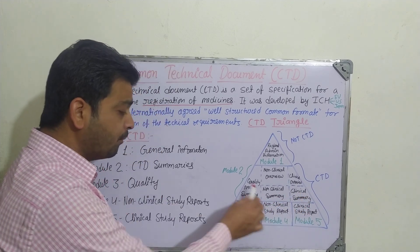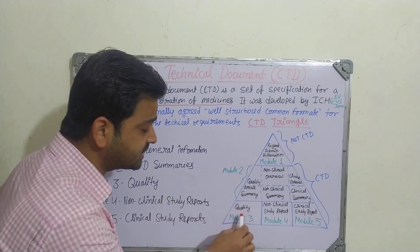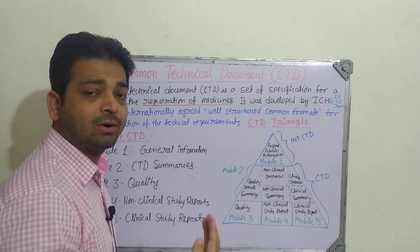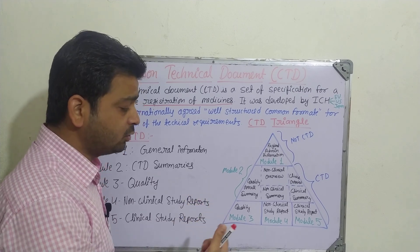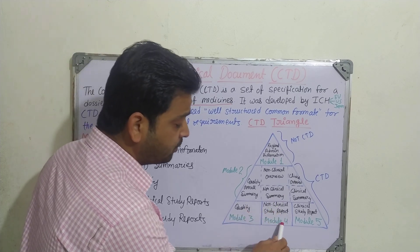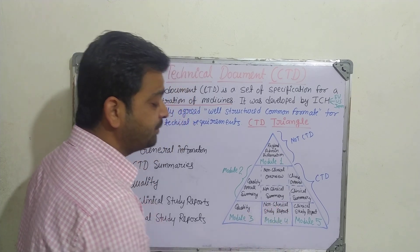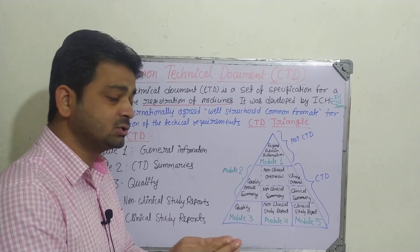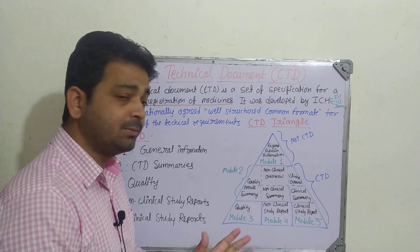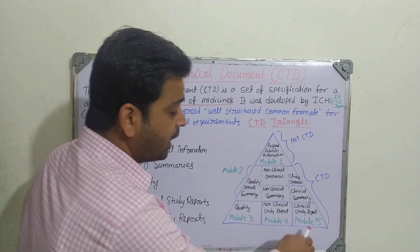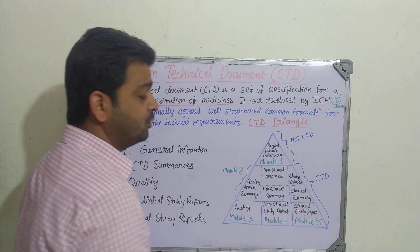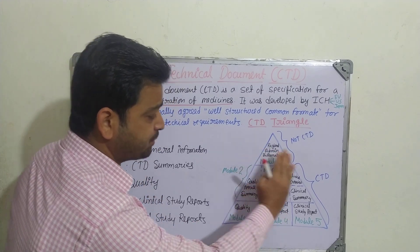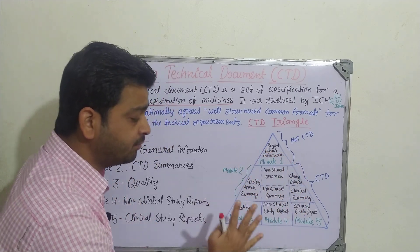Module 3 covers Quality — the quality parameters of the pharmaceuticals, including safety, efficacy, content details, and all related technical information. Module 4 is the Non-Clinical Study Report, where all reports from non-clinical studies conducted on the formulations are submitted. Module 5 is the Clinical Study Report, where the clinical study reports are summarized and submitted. These are the specific points covered in the different modules.